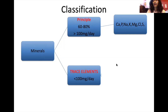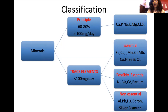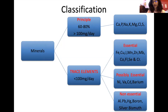Trace elements are divided into three groups. Essential trace elements with important functions include iron, copper, iodine, manganese, zinc, molybdenum, cobalt, fluorine, selenium, and chromium. Possibly essential elements — with uncertain actions — include nickel, vanadium, cadmium, and barium. Non-essential minerals are not required by the body, and increased concentrations may cause toxicity.